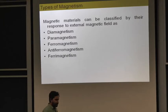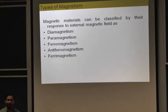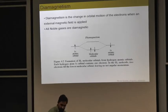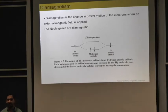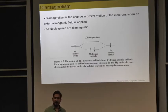Diamagnetism is the fundamental property of every material, but it is a very weak property. In a diamagnetic material, all the magnetic moments of electrons are oriented so that they cancel one another. The system is left with no net magnetic moment. When you place such a material inside a magnetic field, the effective moment of the system decreases. This is what we call diamagnetism.